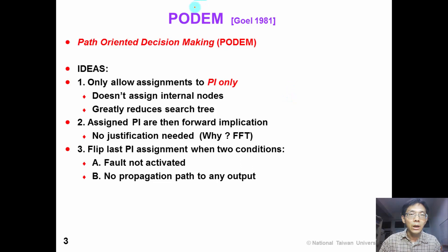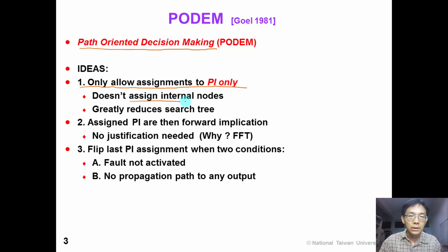The PODEM algorithm was proposed by IBM Dr. Gou in 1981. The full name is Path-Oriented Decision-Making. There are three important ideas. First, PODEM only allows assignment to primary input. It does not assign internal nodes. So this greatly reduces the search tree.